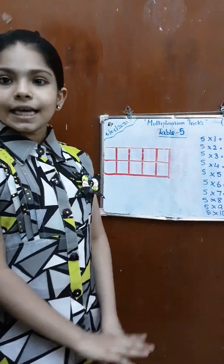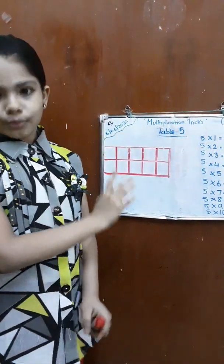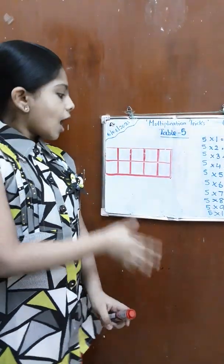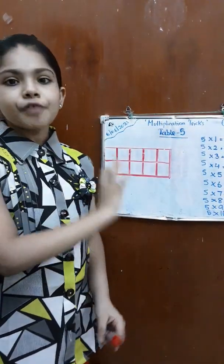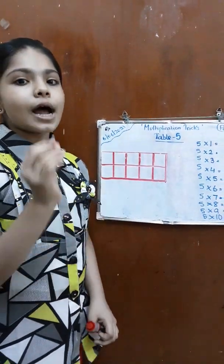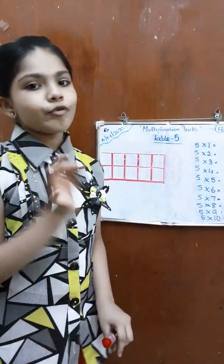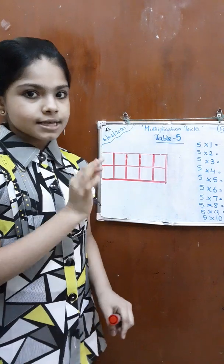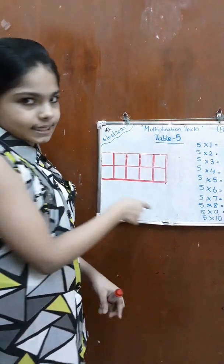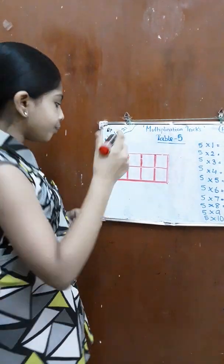So let's begin by drawing a 5 by 2 grid. After drawing a 5 by 2 grid, we have to write the pattern like 5, 0, 5, 0, 5, 0 till the end.